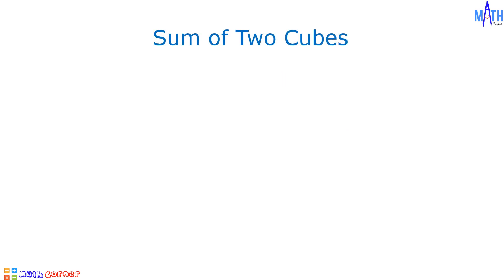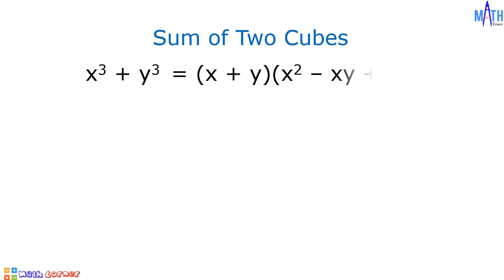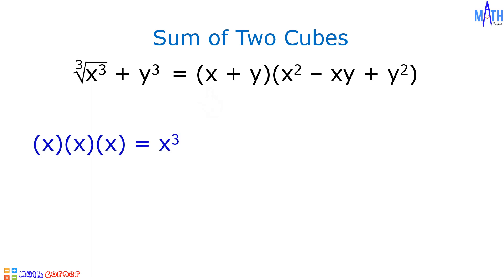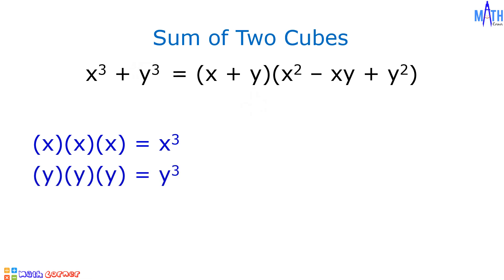For the sum of two cubes, let us consider x cubed plus y cubed. It is equal to quantity x plus y times quantity x squared minus xy plus y squared. In the binomial factor, x comes from the cube root of x cubed, since x times x times x is equal to x cubed. y comes from the cube root of y cubed, since y times y times y is equal to y cubed.